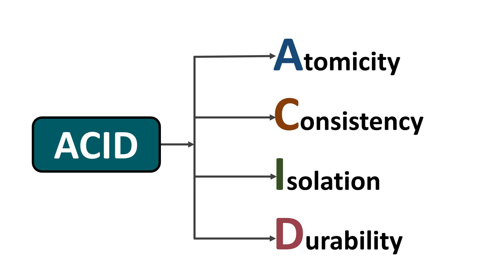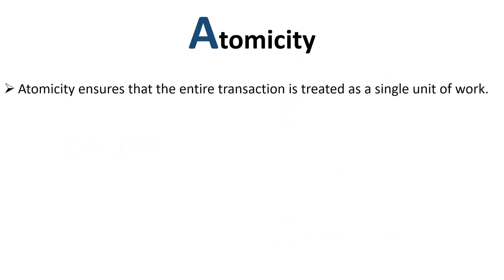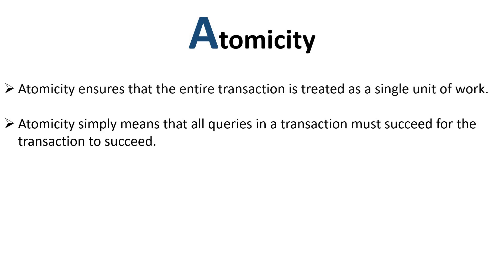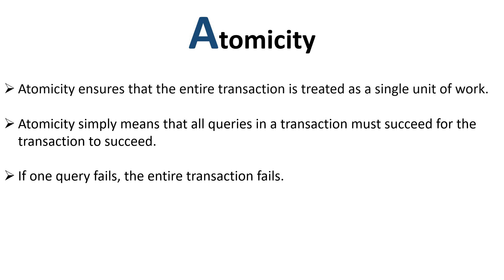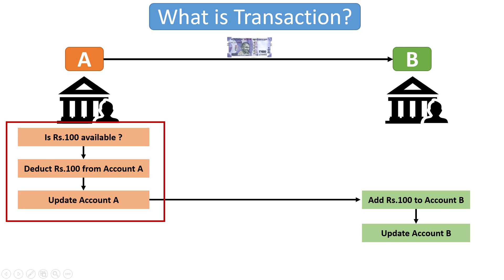In Atomicity, a transaction is treated as a single unit of work. A transaction is called successful if and only if all the queries or operations in that transaction are successful. If any single query fails, the entire transaction fails. For example, when transferring funds between accounts, if deducting funds from one account fails due to insufficient balance or any other error, the entire transaction will be rolled back and no changes will be made to any account. Atomicity prevents partial updates and maintains the consistency and integrity of the data.